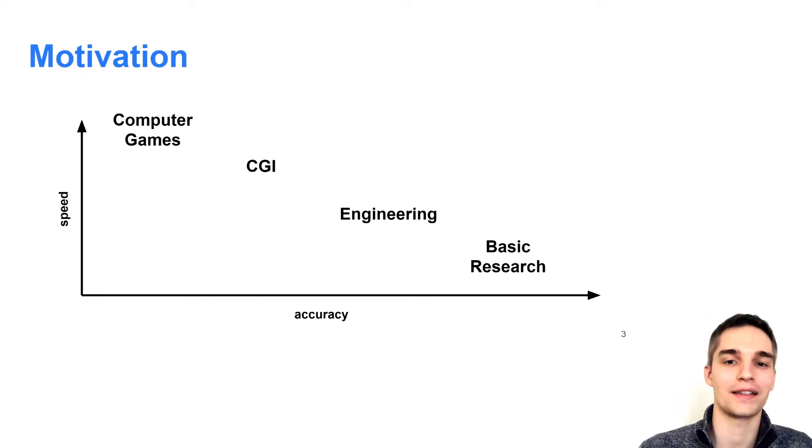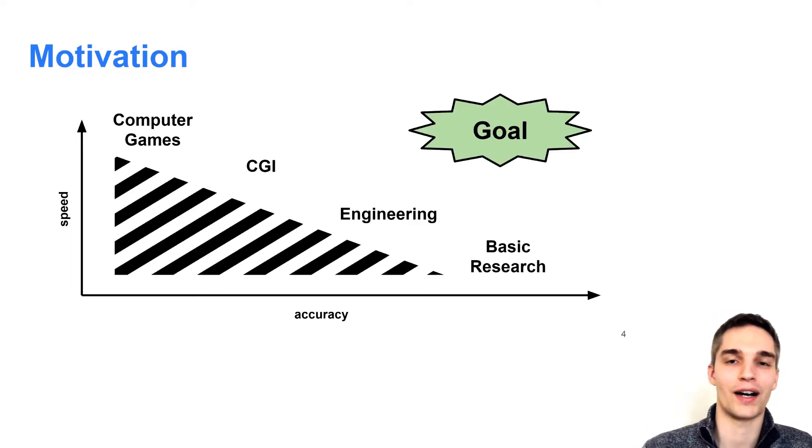Thus, for all of the applications I just mentioned, one has to find certain trade-offs between speed and accuracy. For example, games have to run in real-time while applications in engineering and basic research demand low error bounds. And obviously our goal is to get as fast and accurate as possible, or in other words, to push that boundary to the top right corner.